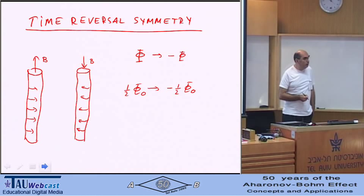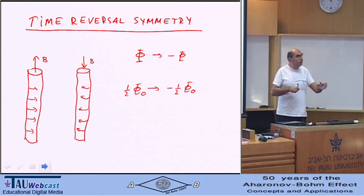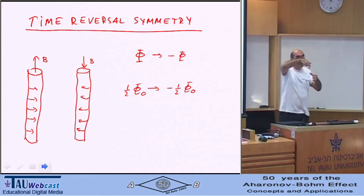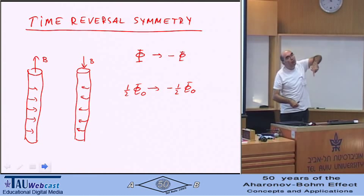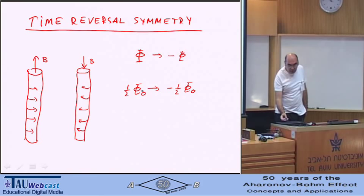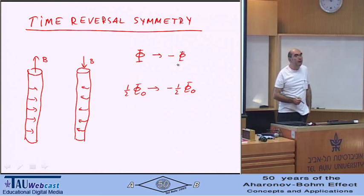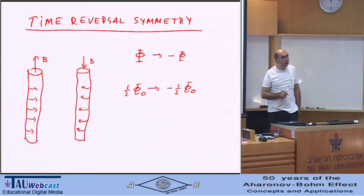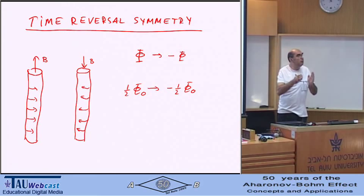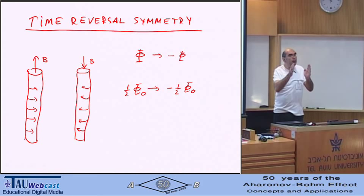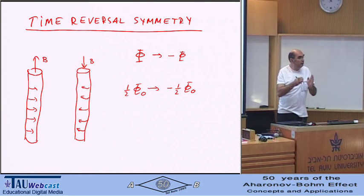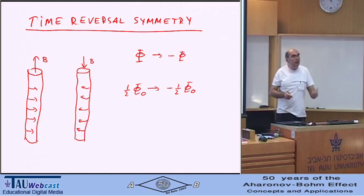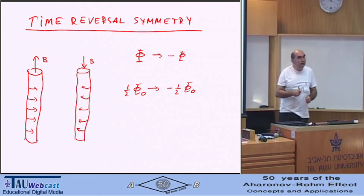Think what happens under time reversal in the fluxon. Well, in the solenoid, you have a current that goes one way. If you do the time reversal, now it will go the other way around. That means that the magnetic field that was one direction now will be the other direction. So that means that the flux phi goes to the flux minus phi. Phi was half a quantum, so you get minus half a fluxon. But here's the point.